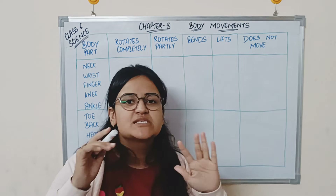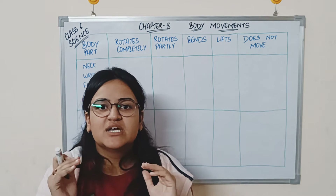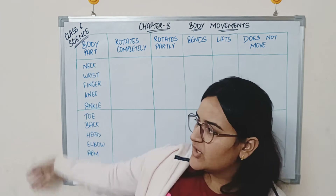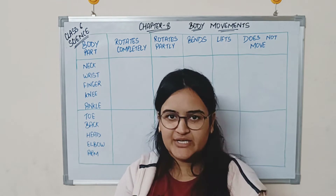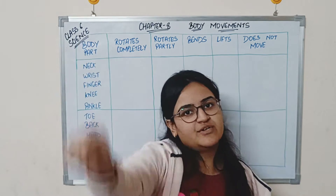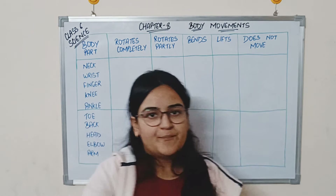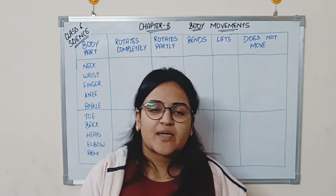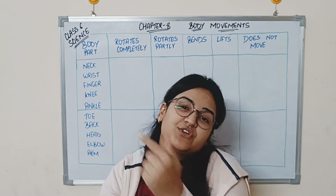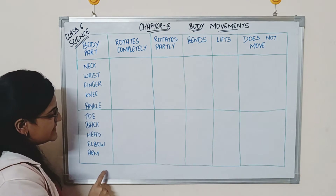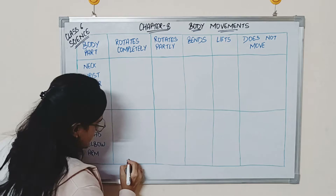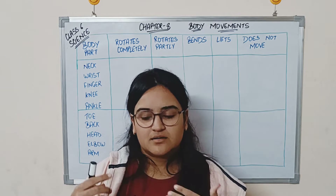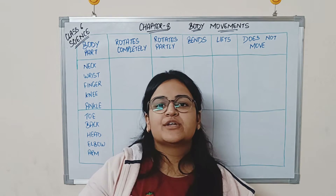Firstly, we will start with simple examples. Imagine you are bowling — when you bowl, you rotate your arm fully. It is possible to rotate your arm 360 degrees. We will study what these joints are called later, but at your arm you can rotate it completely. So in this table, arm will rotate completely — yes.